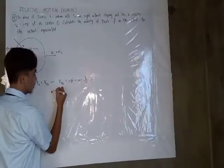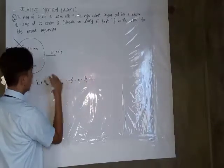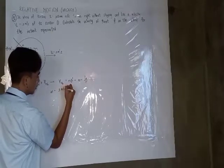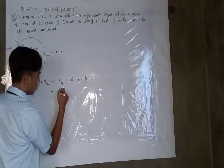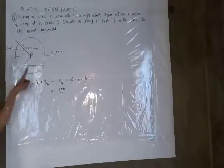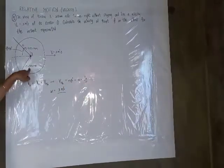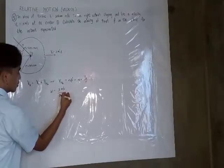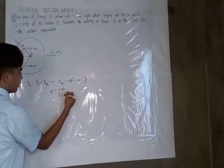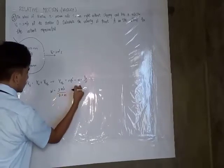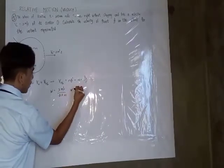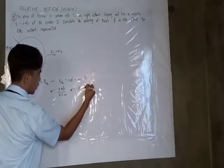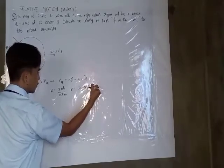Angular velocity equals the initial velocity over the radius. So, angular velocity equals 3 meters per second divided by 0.3 meters (converting 300mm to meters), giving us an angular velocity of 10 radians per second.